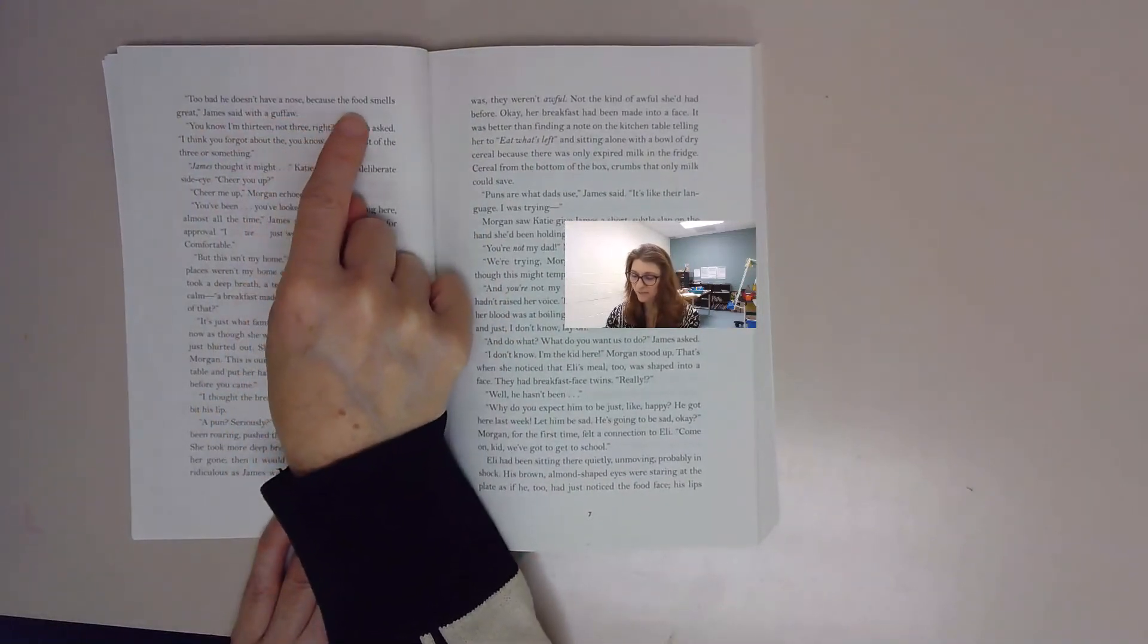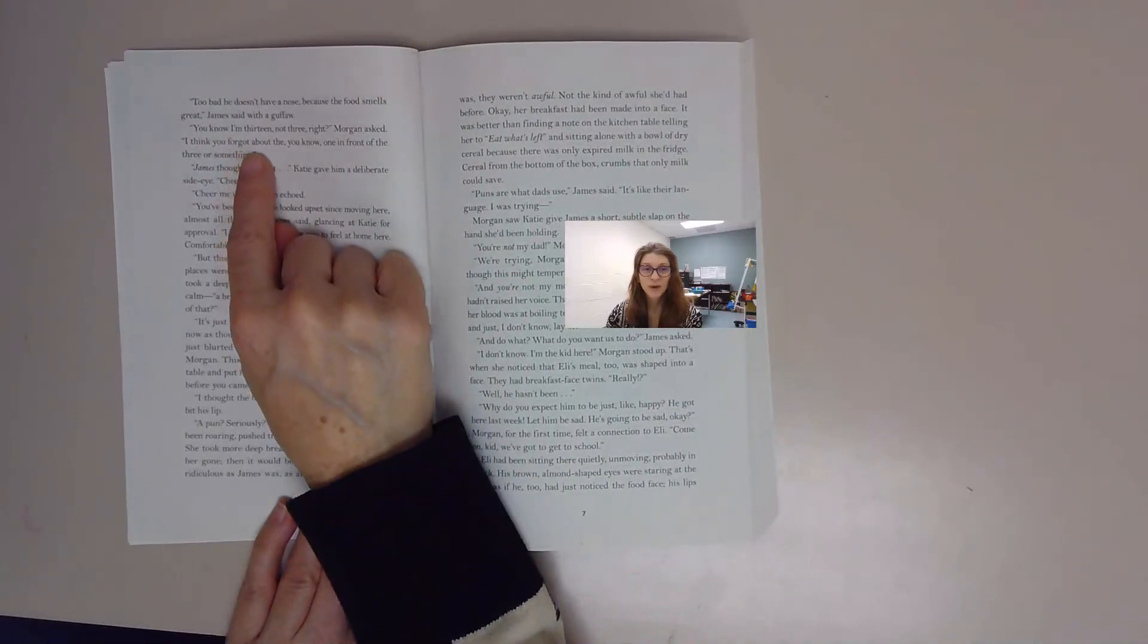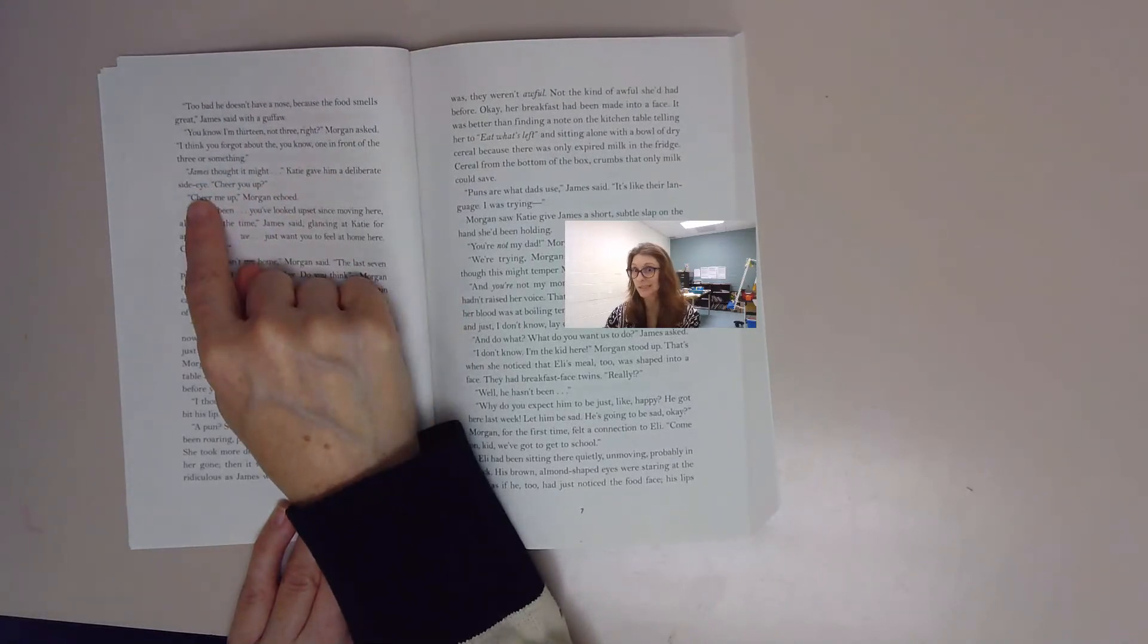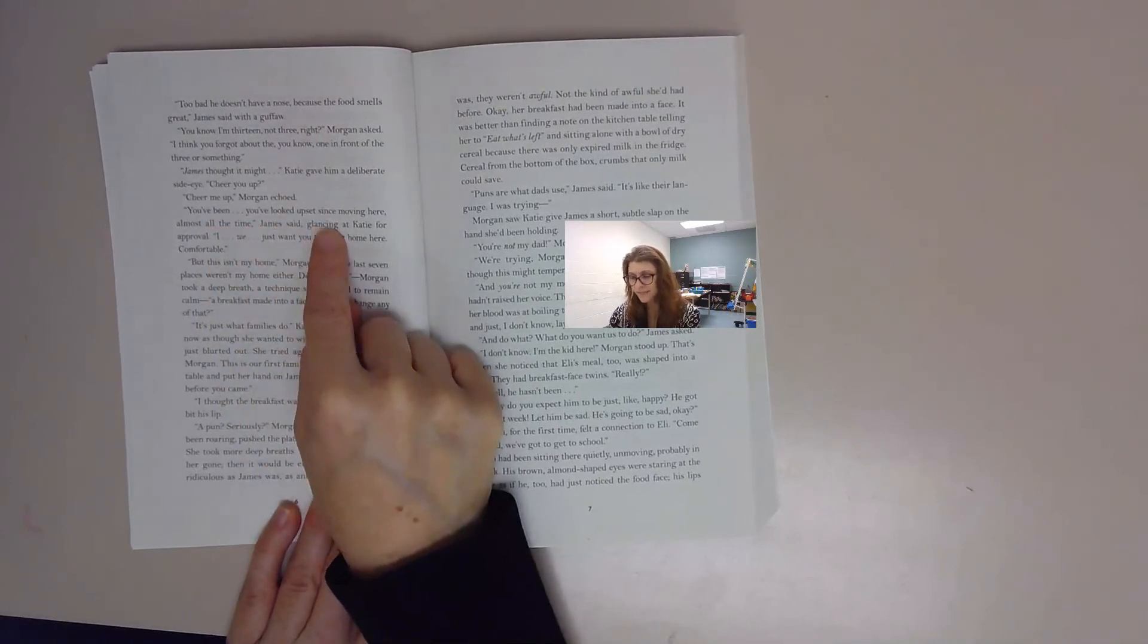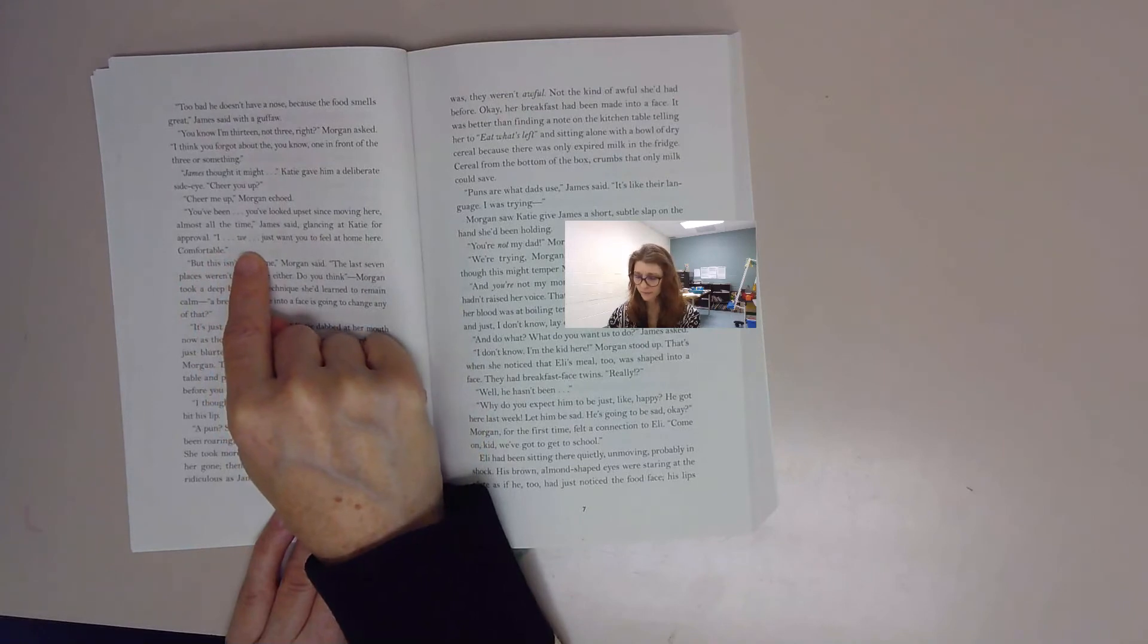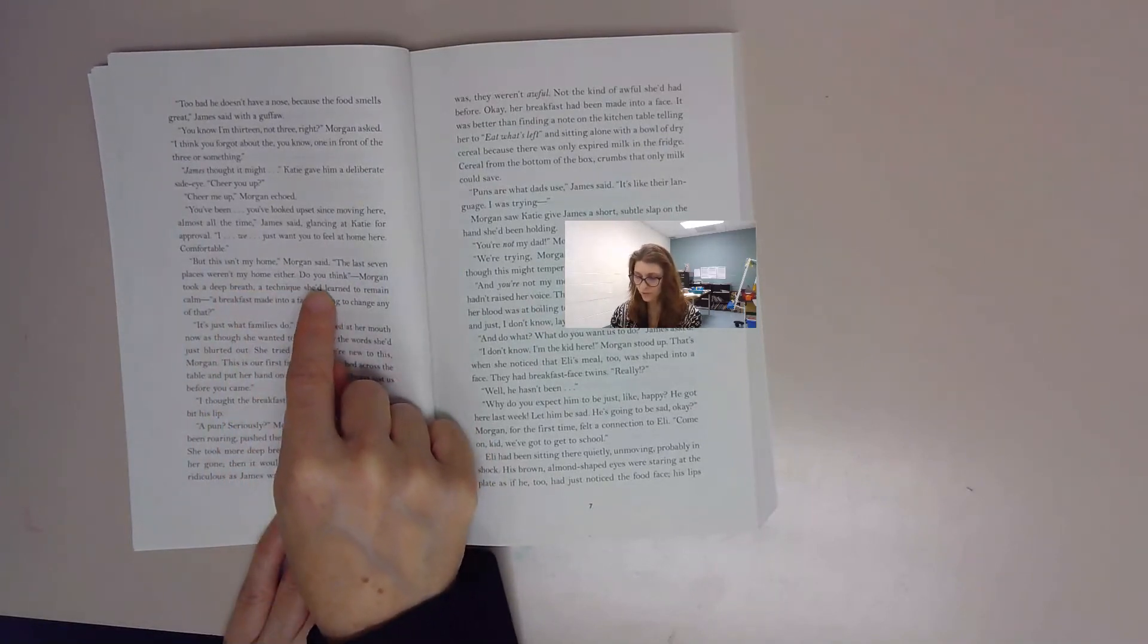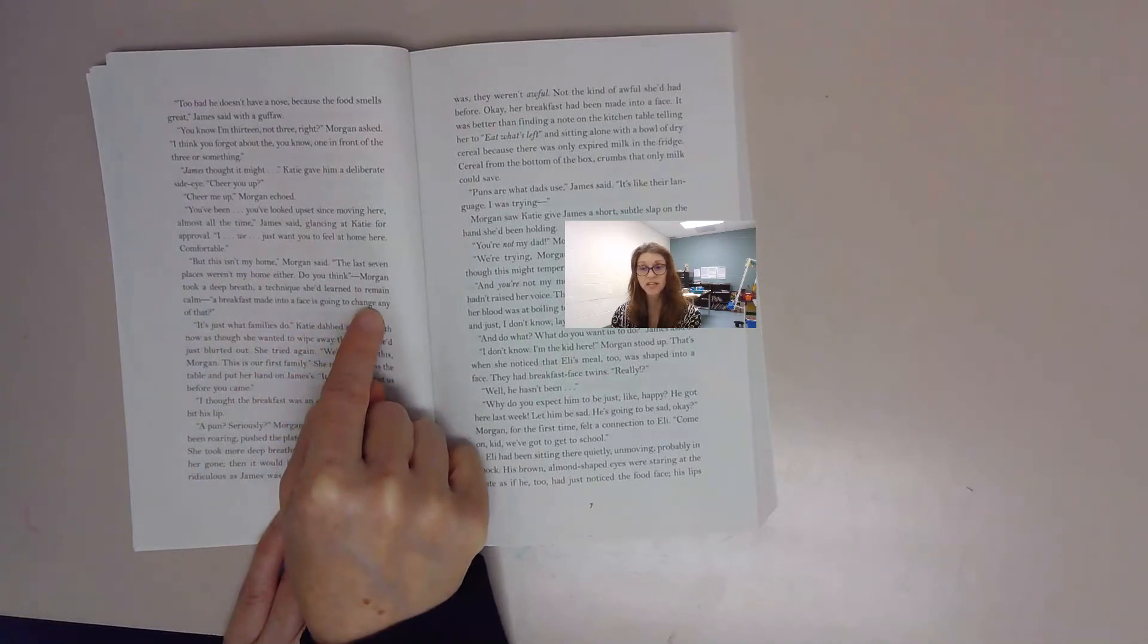Too bad he doesn't have a nose because the food smells great, James said with a guffaw. You know I'm 13, not three, right Morgan asked. I think you forgot about that, you know, one in front of three or something. James thought. Katie gave him a deliberate side-eye. Cheer you up? Cheer me up, Morgan echoed. You've looked upset since moving here, almost all the time, James said, glancing at Katie for approval. We just want you to feel home here, comfortable. But this isn't my home, Morgan said. The last seven places weren't my home either. Do you think - Morgan took a deep breath, a technique she'd learned to remain calm - a breakfast made into a face is going to change any of that?